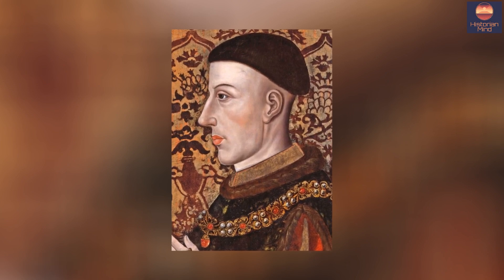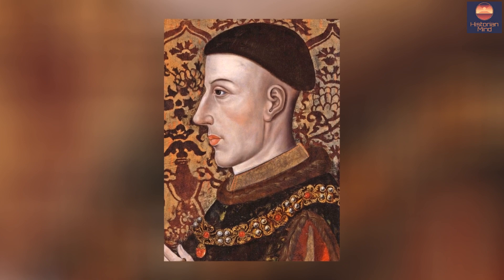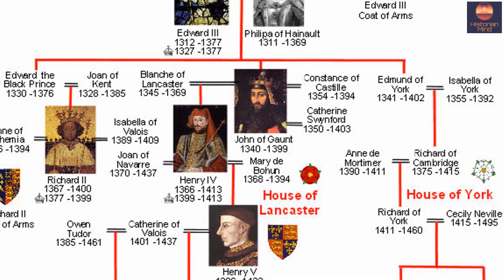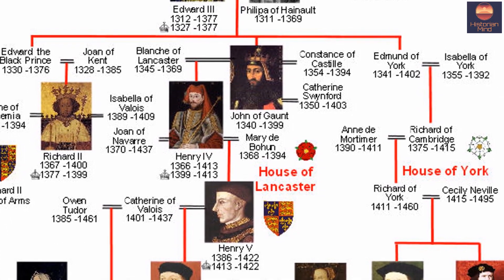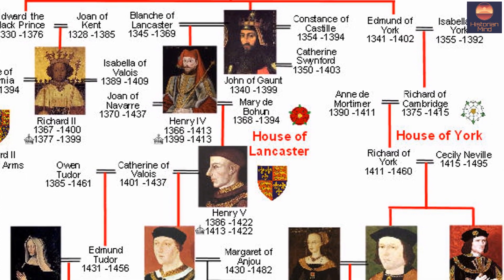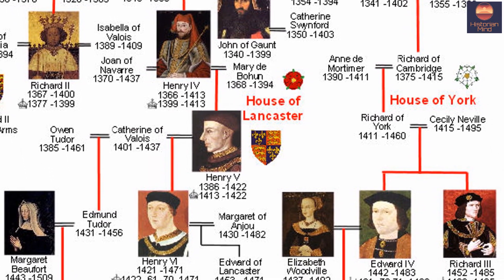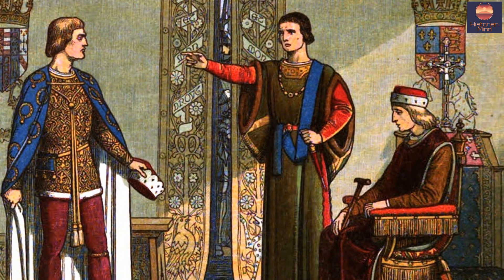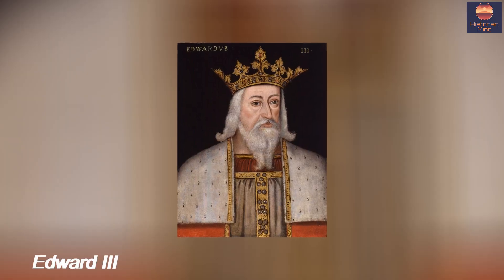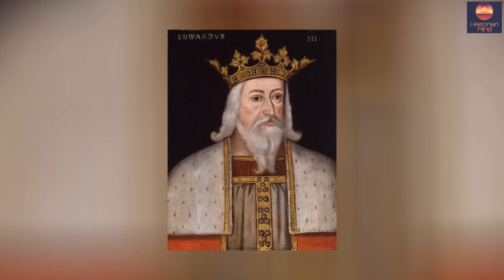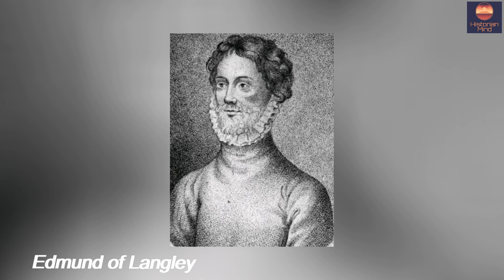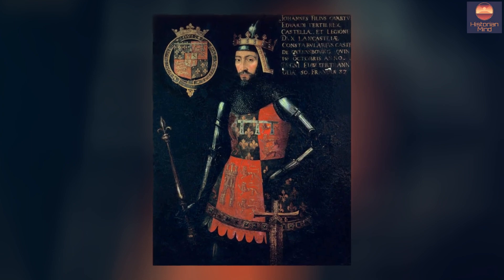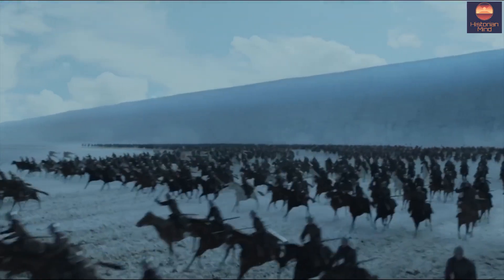Henry V was crowned king at a young age. The House of Lancaster descended from John of Gaunt, the third surviving son of Edward the Third. When Henry VI succeeded King Henry V, the third Duke of York, Richard of York, challenged the royal crown of Henry VI for his entitlement to be King of England. The two houses descended from the same king, Edward the Third — Edmund of Langley of House York being the youngest brother of John of Gaunt of House Lancaster.